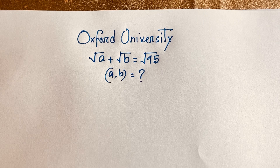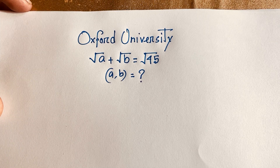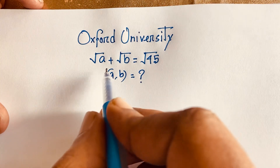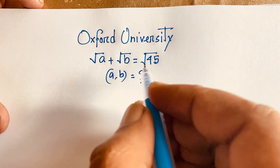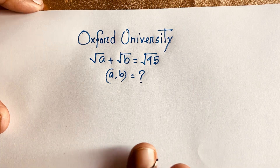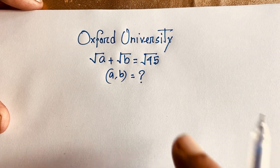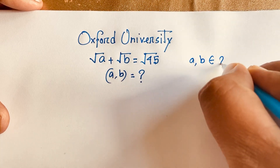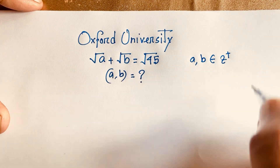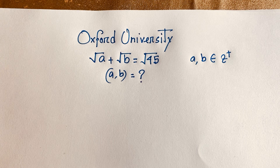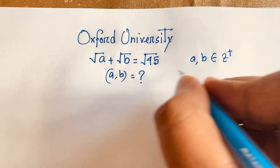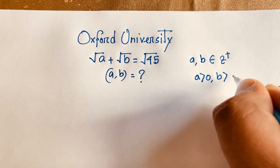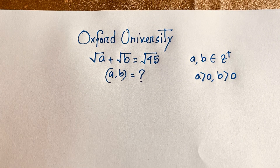Hello everyone. In this video, we have solved this interesting radical Math Olympiad question. This question is: square root of A plus square root of B is equal to square root of 45. A and B is equal to what? Here, A and B are positive integers, and we'll find out their values. A is greater than 0 and B is also greater than 0. Let's start.